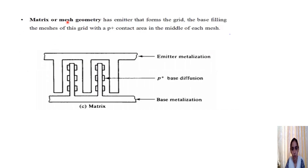In the matrix or mesh geometry, the emitter and base contact the surface and both are metallized. The structure looks similar to the interdigitated geometry with finger-like structures for the emitter and base. The addition in the matrix or mesh geometry is that it looks like a mesh, and in the middle of each mesh a diffused P+ base region is added by diffusion. The base fills the meshes of this grid with a P+ contact area in the middle of each mesh.